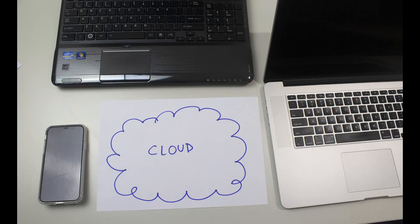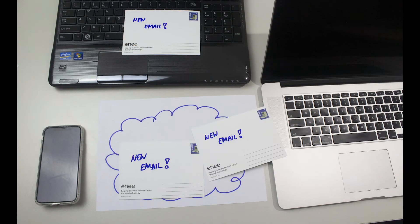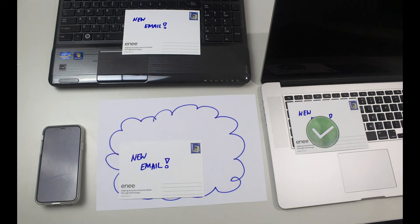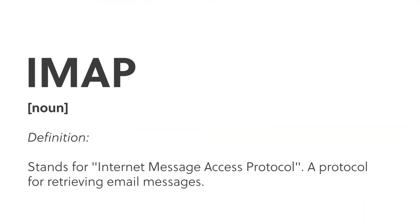Modern professional email systems store all your emails in the cloud, so if you do have multiple devices, each of those devices can access that same email at the same time and synchronize them across all your devices. These newer email systems use technologies such as IMAP and Exchange to synchronize email between the server and your computer, giving you a rich webmail experience, large amounts of storage space so you never have to delete an email again, and collaboration features with your colleagues such as calendar sharing and file sharing.